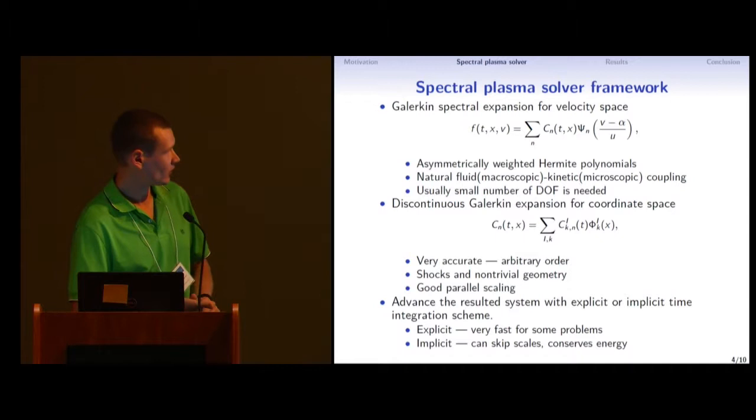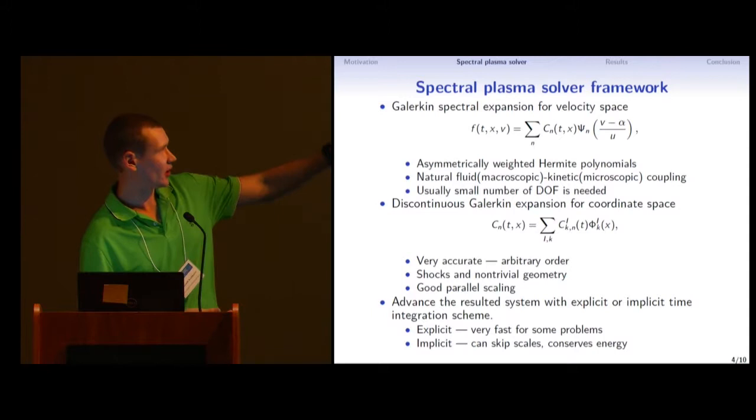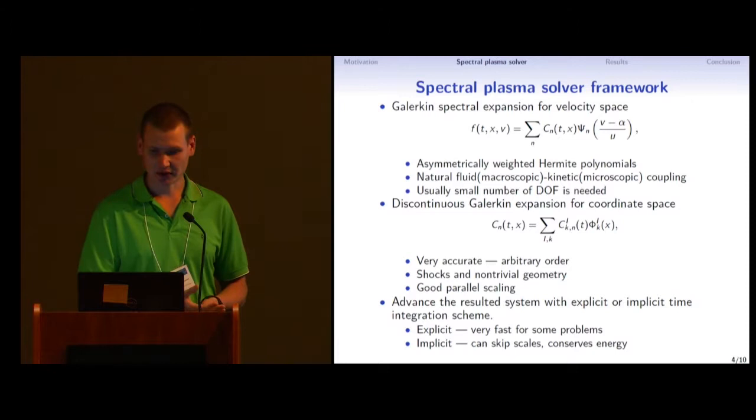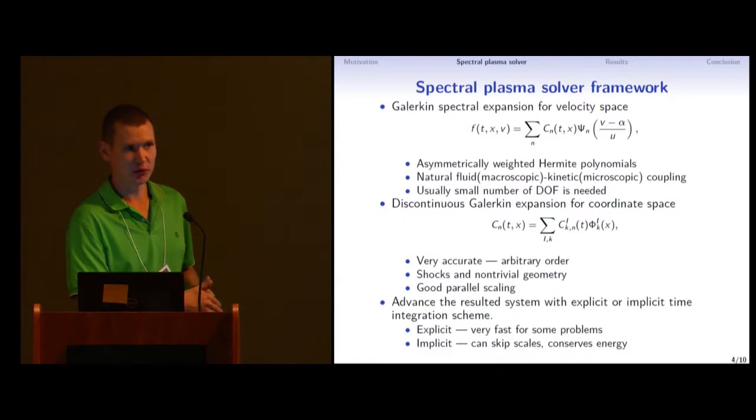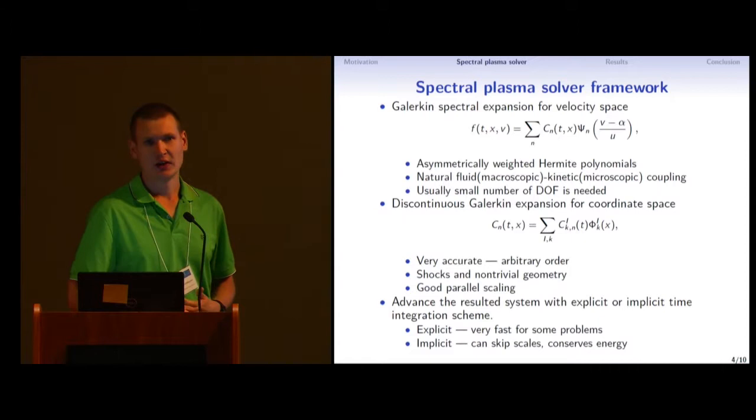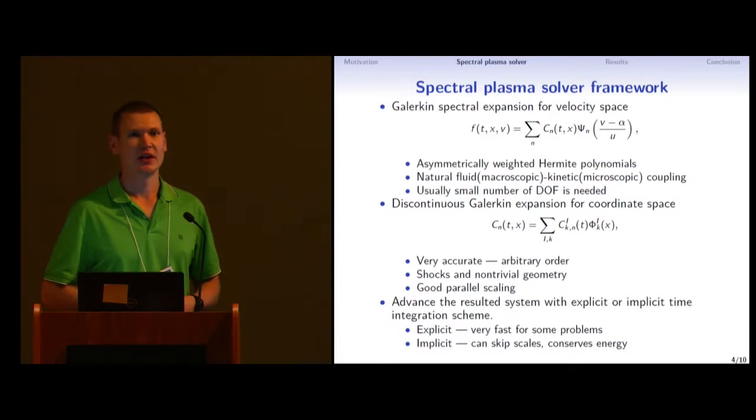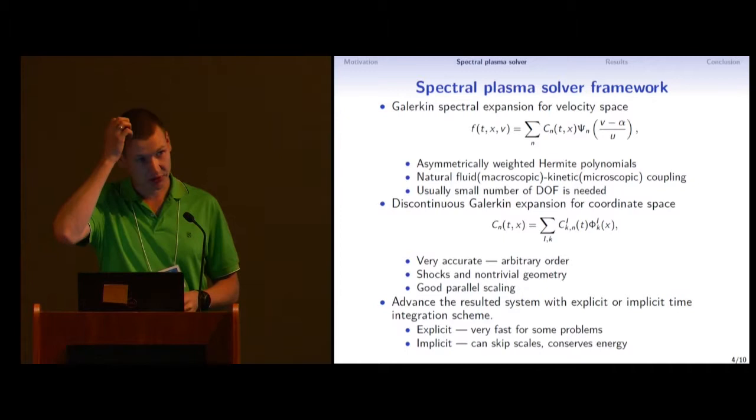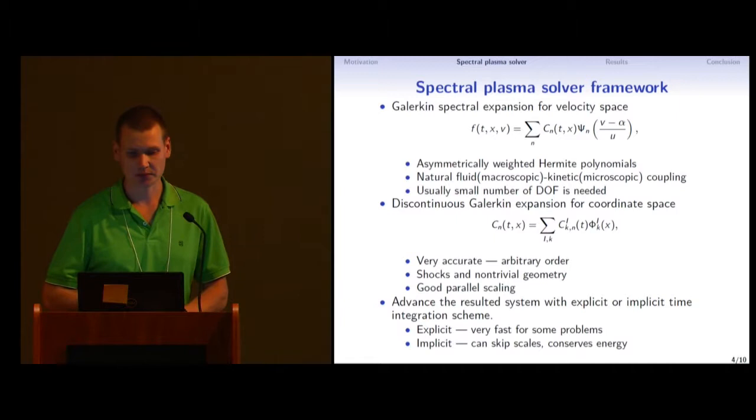So a little bit more precisely, to discretize the velocity space, we expand our distribution function in spectral series with asymmetrically weighted Hermite polynomials. And they have this fluid coupling. Essentially, those expansion coefficients first correspond to fluid moments like density, velocity, temperature, and so on. So if you just use four moments in each direction, you would get something like advanced MHD with even some kinetic effects. And when you include a number of moments, you incorporate more and more kinetic effects. This efficient representation of the velocity space allows to save a lot of degrees of freedom.